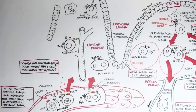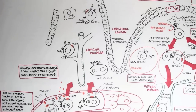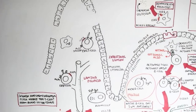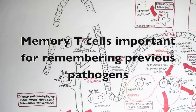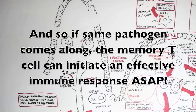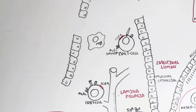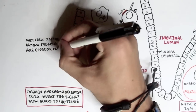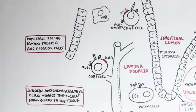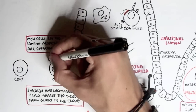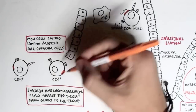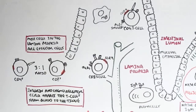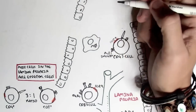T memory cells within the lamina propria are very important; we actually have a lot of them there. This is because mucosal immunity is continuously exposed to pathogens when we eat, and we need memory of those pathogens to initiate an effective immune response quickly. Most cells in the lamina propria are effector cells such as T helper cells and plasma cells, as well as memory cells. Within the lamina propria there is actually more CD4 cells than CD8 cells, about a 3 to 1 ratio, because we need CD4 cells to help activate macrophages and to stimulate IgA producing plasma cells.